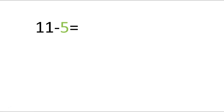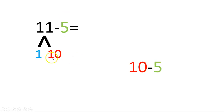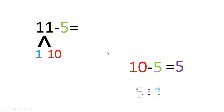I want you to go ahead and do all of this one. Break up the 11, do your number sentences, solve 11 minus 5. Push pause and then push play when you're done. Let's see if yours looks like mine. I'm going to break up the 11 — I took out 1 and then I had 10 left over. My first number sentence is going to be 10 minus 5 equals 5. Is that what you've gotten so far? I hope so. Then my next number sentence is going to be 5 plus 1, and I said 5 plus 1 equals 6. So 11 minus 5 is 6. If yours looks like mine, give yourself a kiss on the brain. Excellent job.